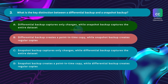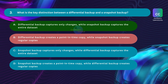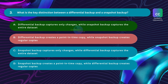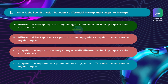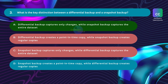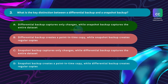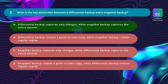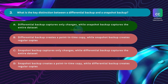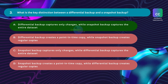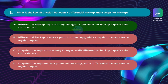Option B is incorrect — a differential backup does not create a point-in-time copy; it captures changes since the last full backup. A snapshot, on the other hand, is the one that creates a point-in-time copy of the entire dataset. Option C is incorrect — a snapshot captures the entire dataset at a specific point in time, not just the changes; a differential backup is the one that captures changes since the last full backup. Option D is incorrect — a snapshot creates a point-in-time copy, but a differential backup does not create regular copies; it captures changes since the last full backup, which may result in different sizes for each differential backup depending on the extent of changes.